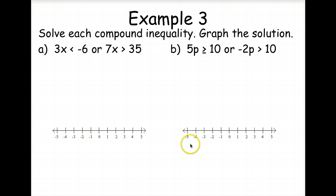Okay, and our final example for today. We've got OR, so it's going to satisfy either of these. So we're going to divide both sides by 3 and both sides by 7. So X is less than negative 2 OR X is greater than 5. So we've got what satisfies both of those.